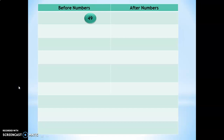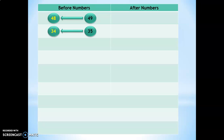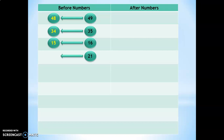What is the number which comes before 49? The answer is 48. Next question: what is the number that comes before 35? The answer is 34. What is the number that comes before 16? The answer is 15. What is the number that comes before 21? The answer is 20.